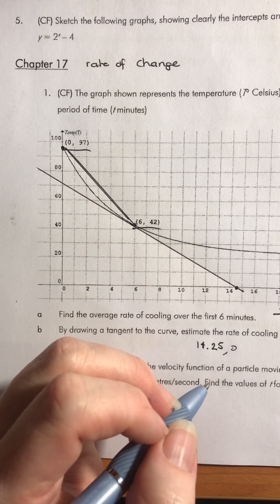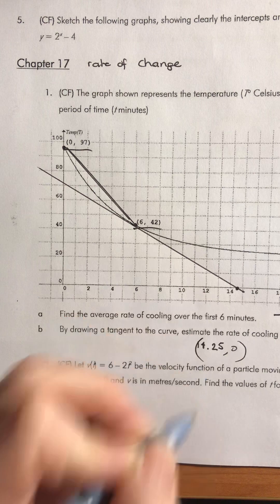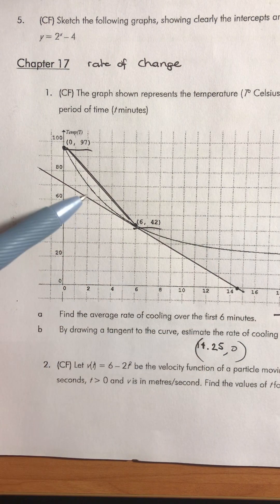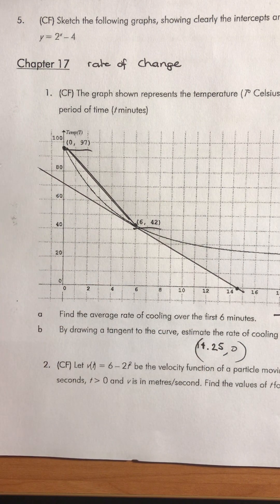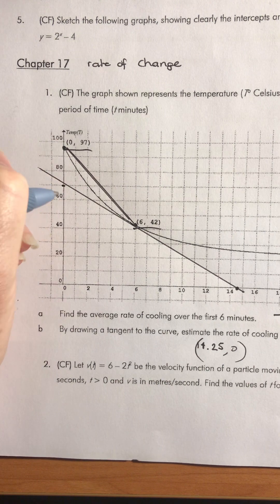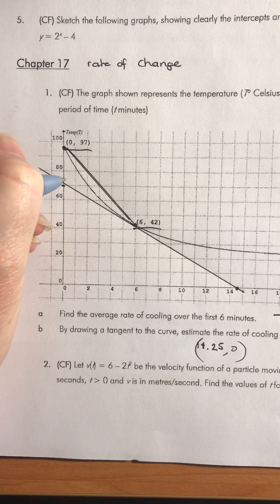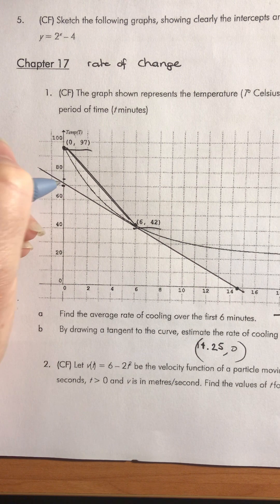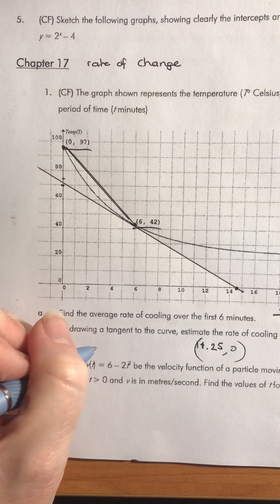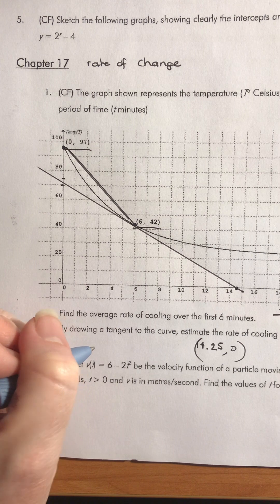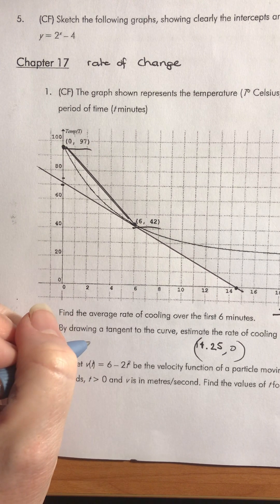So that looks like about 14.25. This is where we're obviously estimating, so we can get a range of answers there. Then we've got our first one over here. I might try and estimate where that is. So I've got, if that's 60 and that's 80, this is 70 there, and probably that's 75, so probably around 72 that we're starting at.